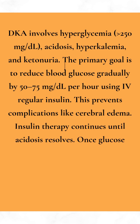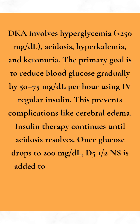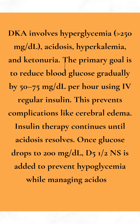Once glucose drops to 200 mg per deciliter, D5-1/2 NS is added to prevent hypoglycemia while continuing to manage acidosis.